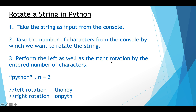Then perform the left as well as the right rotation by that many number of characters. So if my string is 'python' and the number of characters entered is two, then the left rotation is going to yield this result — 'py' has been shifted to the back of 'thon'. In right rotation, 'on' has been prefixed to the substring 'pyth'. This is right rotation.